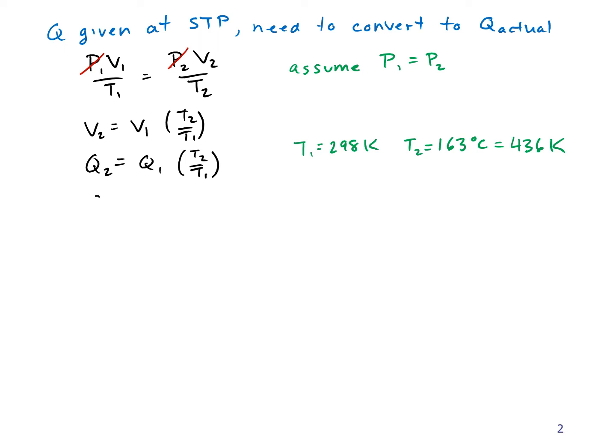So now I can say that Q2 equals my standard conditions Q, which is 23.61 cubic meters per second, and I multiply by 436 Kelvin divided by 298 Kelvin, and I get 35.54 cubic meters per second.